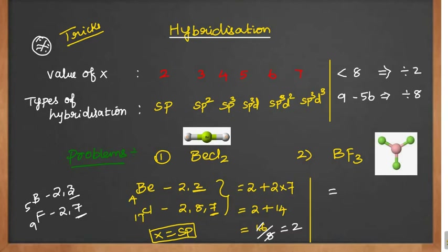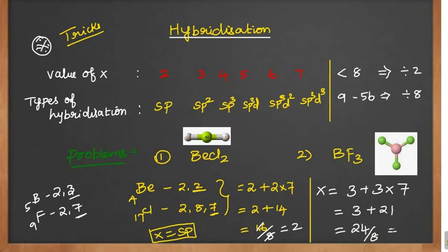There is one boron, so the outermost electron is 3, and 3 into 7 for the fluorines. We get 3 plus 21 = 24, divided by 8. Since 3×8 is 24, the value of x is 3. So 3 means sp2 hybridization.